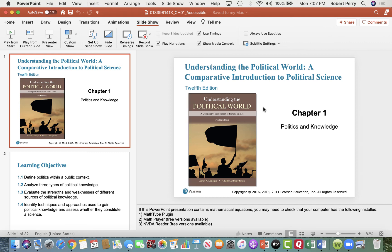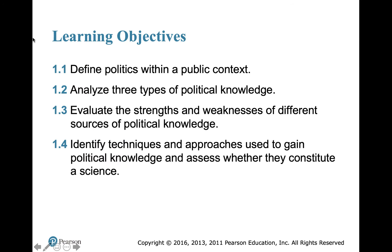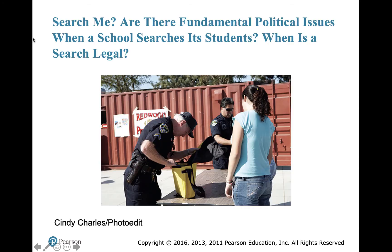Let's talk about chapter one in the Danziger book, Understanding the Political World. We're going to define politics, talk about three types of political knowledge, discuss strengths and weaknesses of political knowledge, and apply techniques to explore whether or not political science is a science.